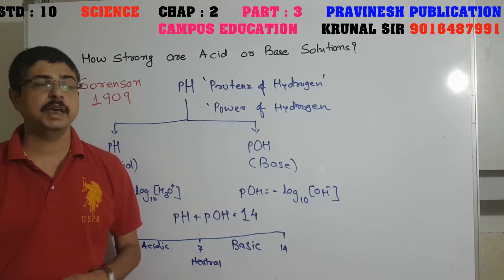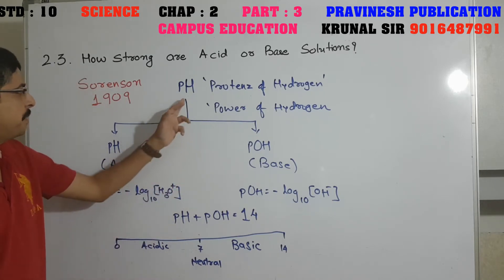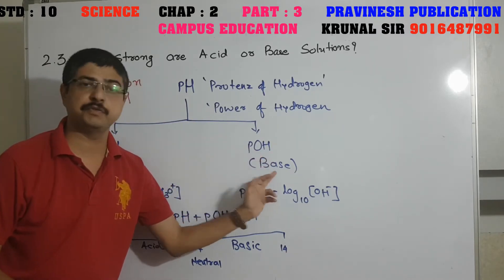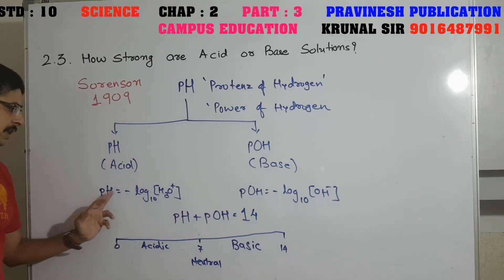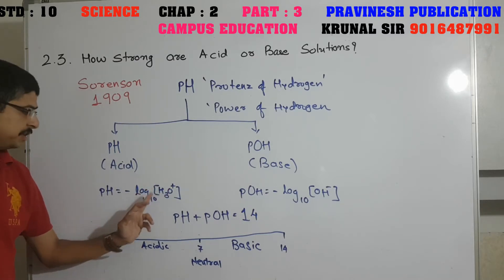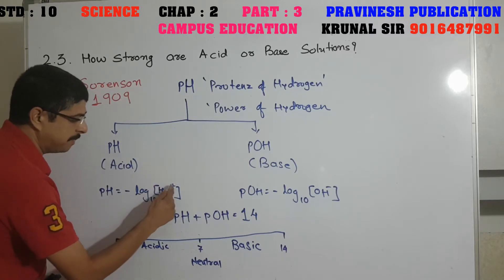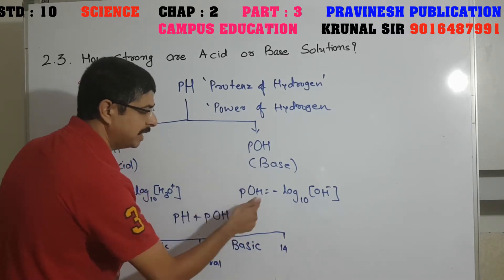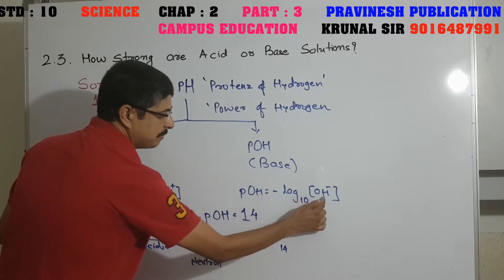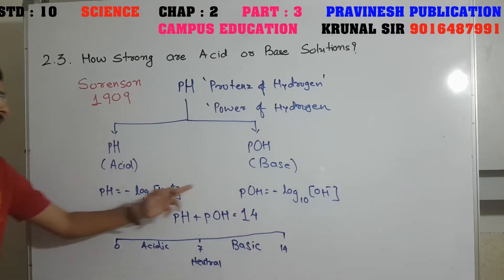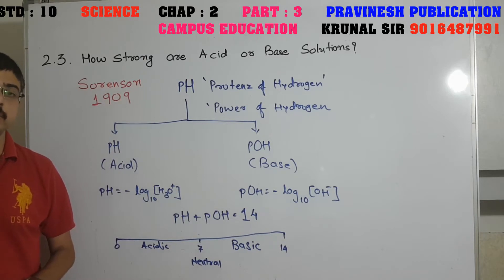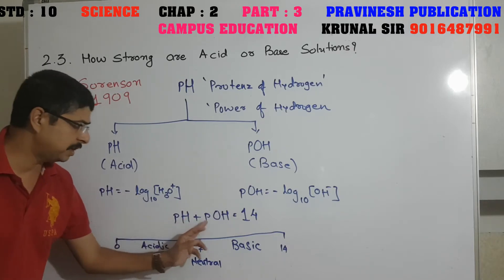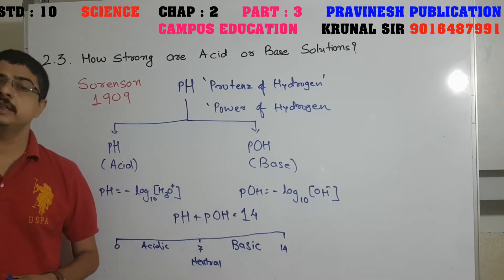We know that acid solution gives H⁺ ions and base solution gives OH⁻ ions. Based on how many H⁺ or OH⁻ ions they give, they have their pH value. We have two scales: pH and pOH. pH stands for acid and pOH stands for base. The mathematical formula of pH is the negative logarithm of H₃O⁺ ion concentration to base 10. Similarly, pOH is the negative logarithm of OH⁻ ion concentration to base 10. This mathematical formula is not in the textbook — it is for higher standards only. For any solution, pH + pOH = 14.